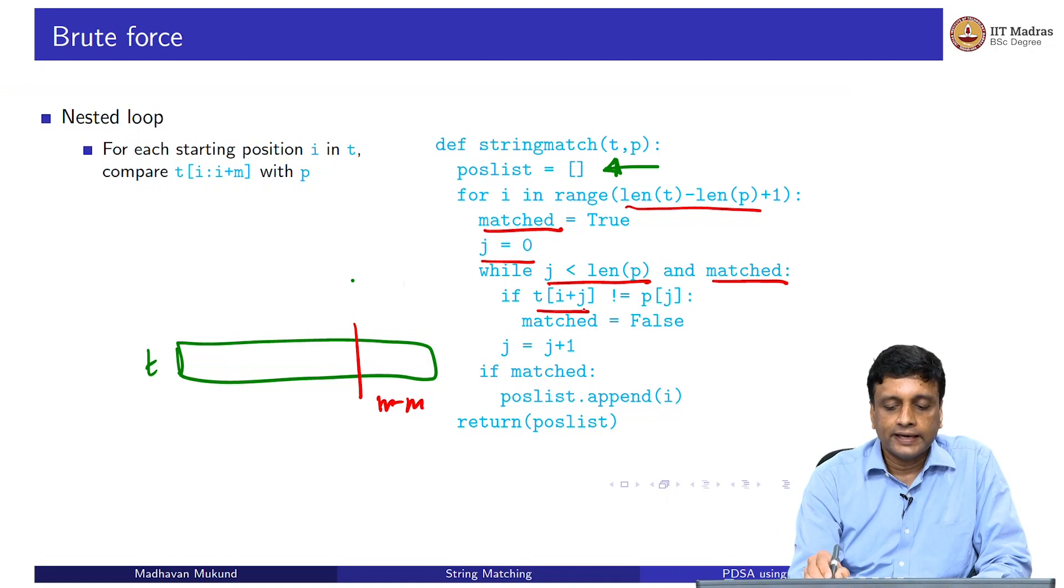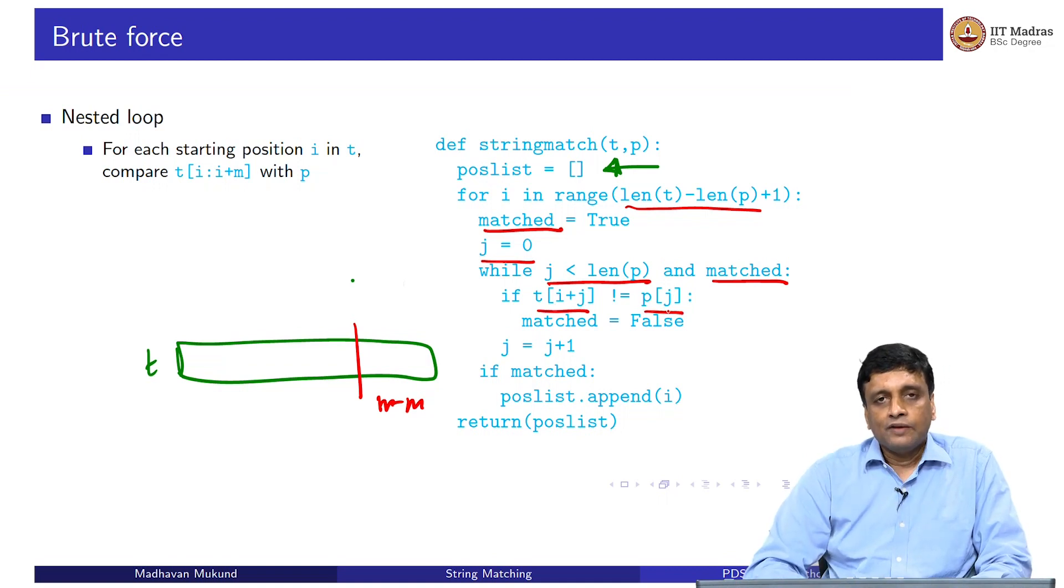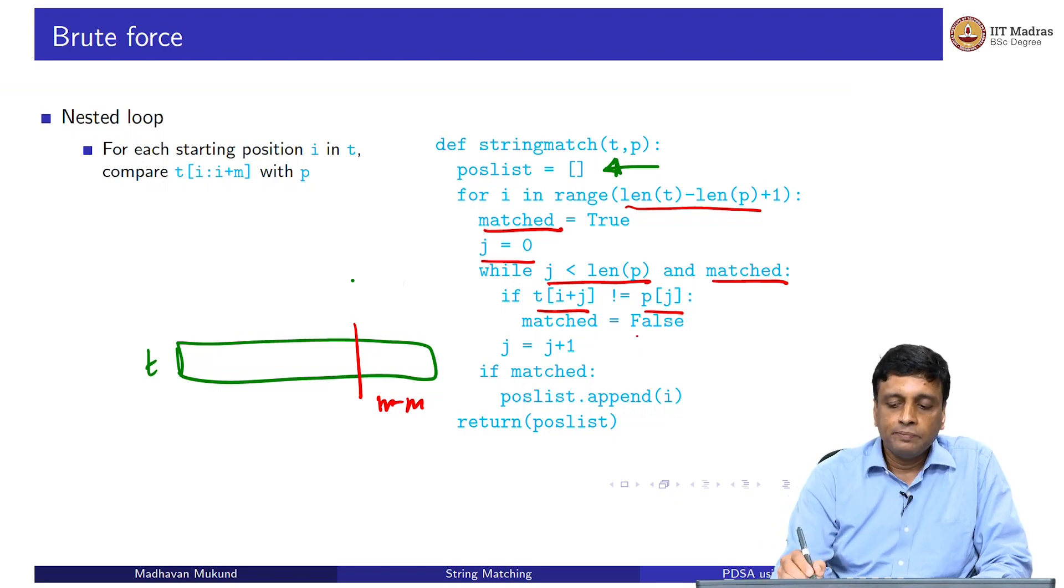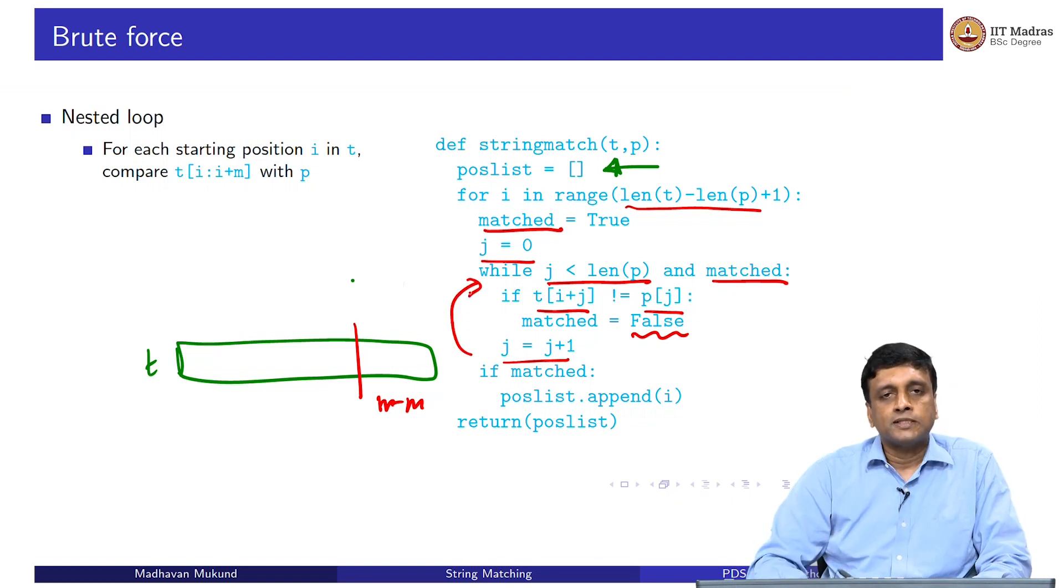I check whether the text at i plus j is equal to the pattern at j. If at any point I find that the text at i plus j does not match the pattern at j, I immediately flag it. I say that the mismatch has occurred, so matched becomes false. And then I increment my j. When I come back here, I have two options, either I have finished the slice, so j has become length of p, or I have flagged a mismatch, so matched has become false.